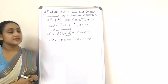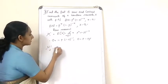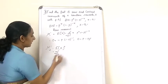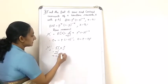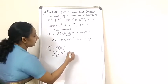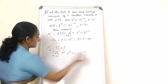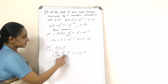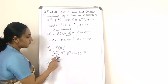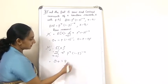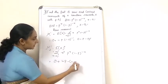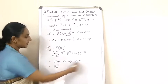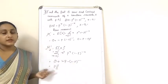Now let's look at the second raw moment, μ₂', which is equal to the expectation of x². When x is equal to 0, the term becomes 0. When x is equal to 1, you get 1 * p * (1-p)^(1-1). After calculating this, μ₂' is also equal to p.